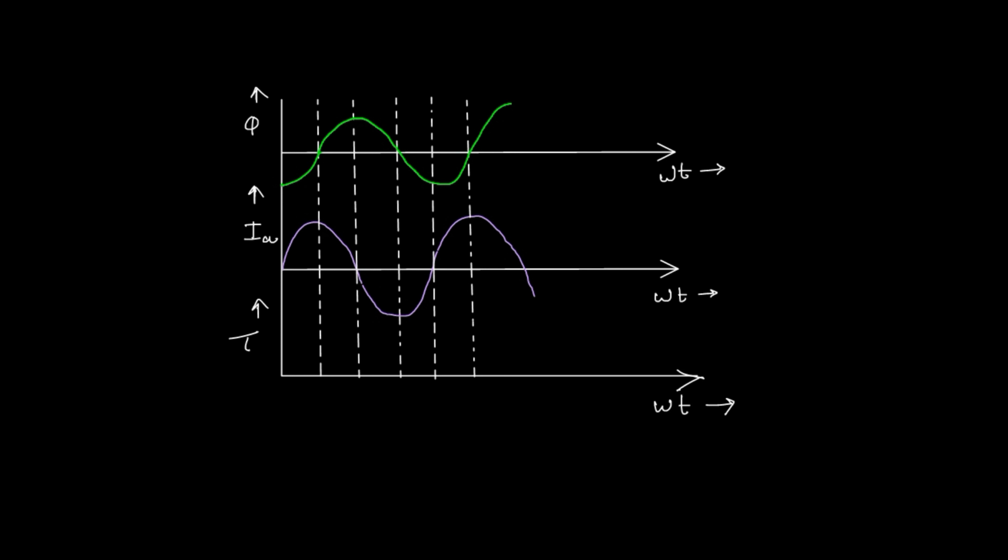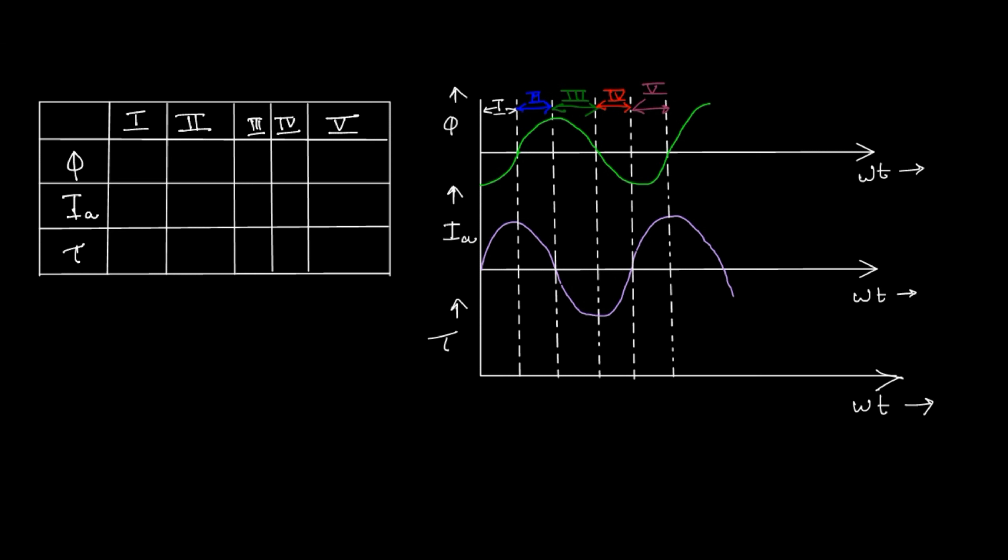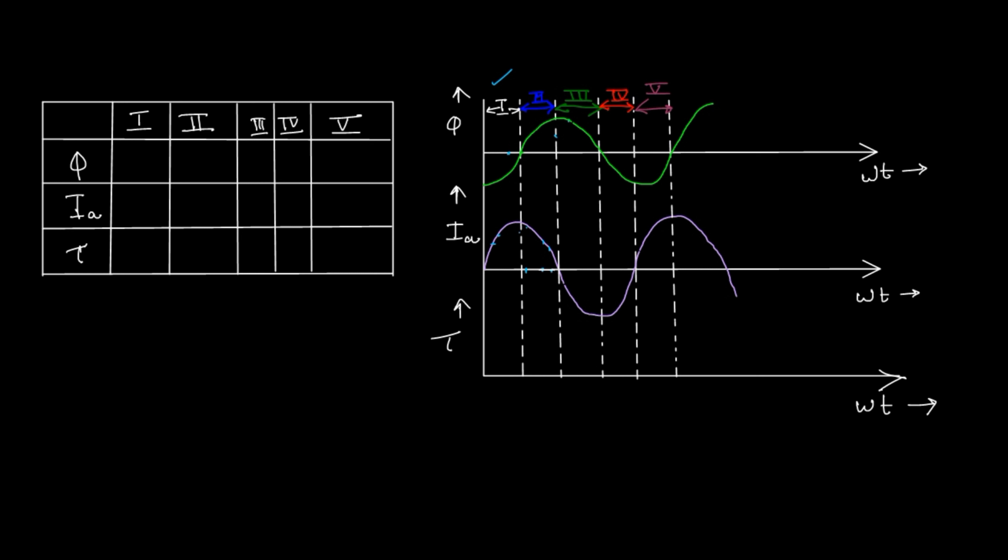As I have said earlier, your flux or the shunt current is lagging behind the armature current 90 degrees. For interval number one, flux is negative and armature current is positive, so negative into positive, your resultant torque is negative.